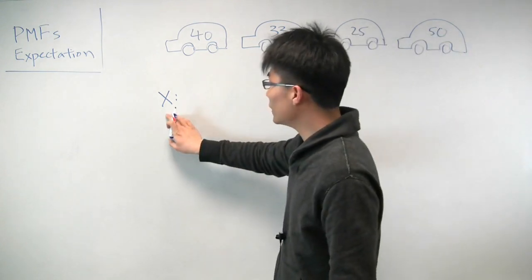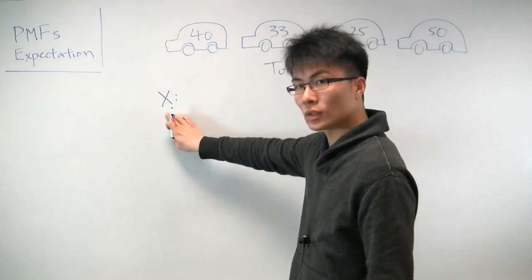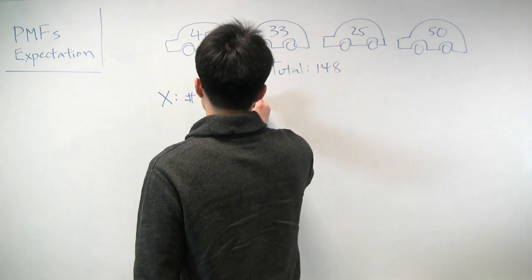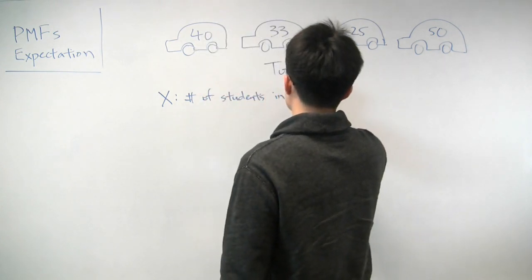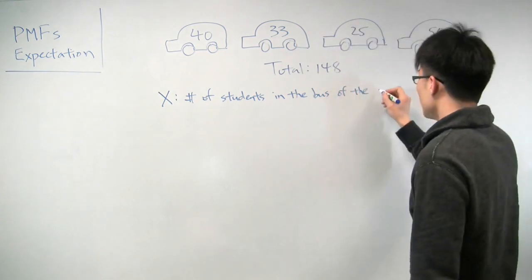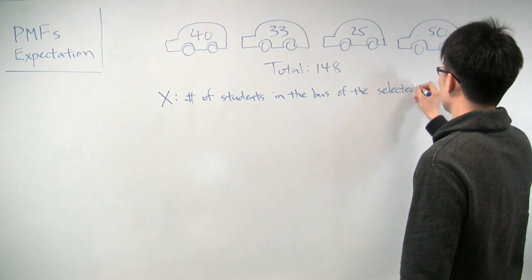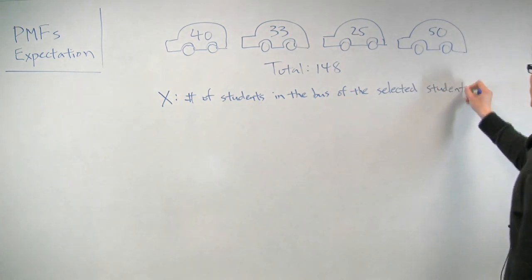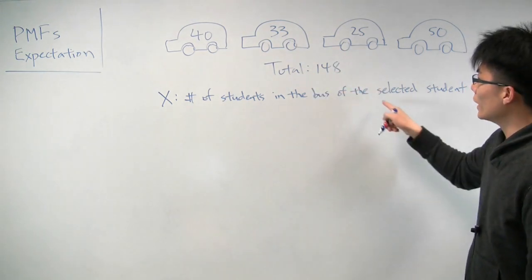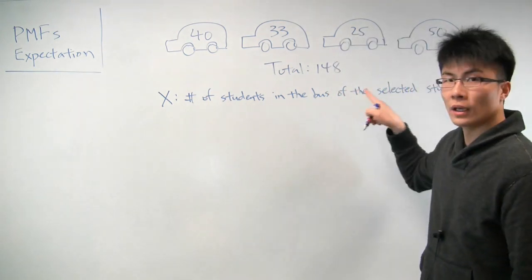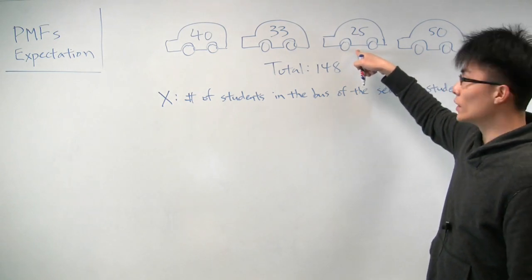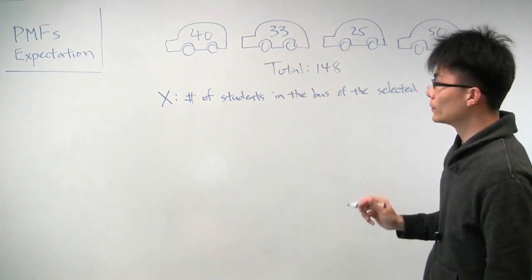Let's assign a couple of random variables. We'll say x corresponds to the number of students in the bus of the selected student. So one of these 148 students is selected uniformly at random, and we'll let x correspond to the number of students in that student's bus. So if a student from this bus was chosen, then x would be 25, for example.